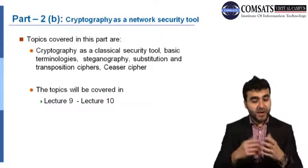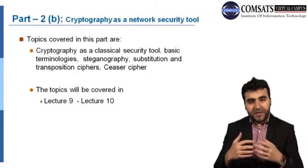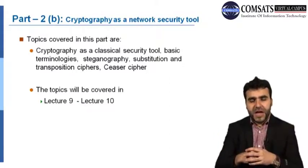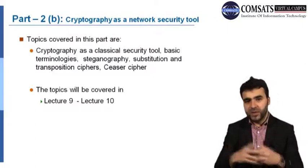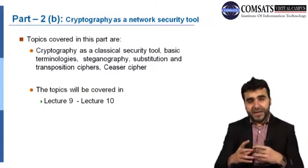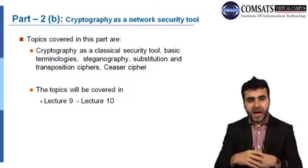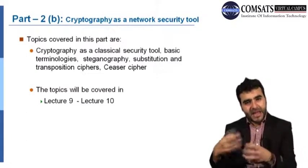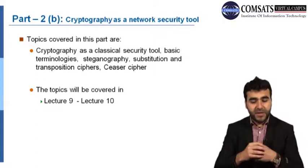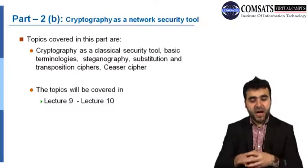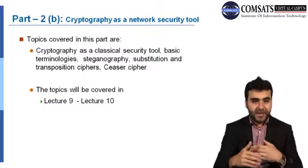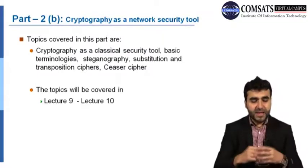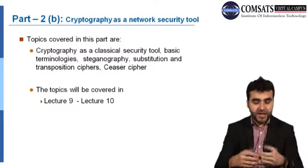Part 2B is about cryptography as a network security tool. Remember that cryptography is a classical network security tool which has been used for centuries and has appeared to be a fantastic tool against any type of security threats and vulnerabilities. We will also be discussing some basic terminologies like ciphertext, plaintext, how a key could be used to make the plaintext encrypted and sent over an insecure channel. Steganography is one technique. Substitution and transposition ciphers will also form part of this, and we will definitely have a look at the Caesar cipher. These topics will be covered from lectures 9 to 10.